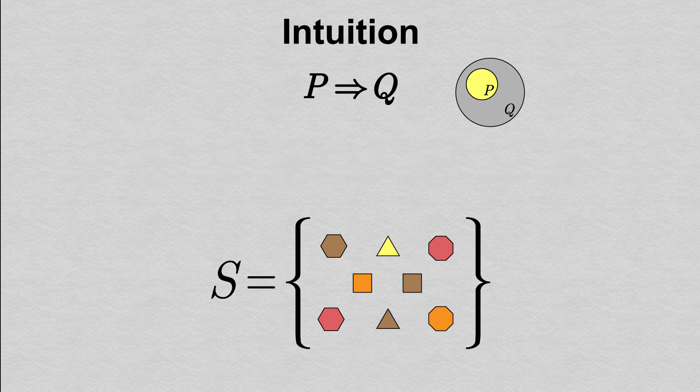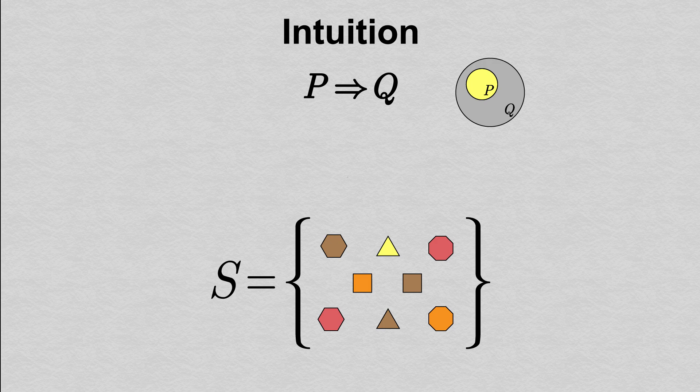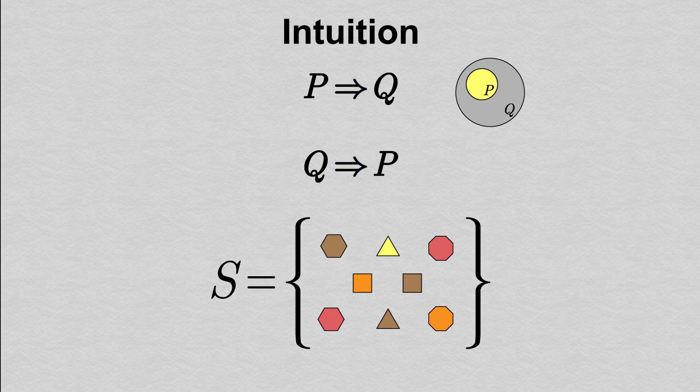Two quick notes about implications are in order. First of all, order is crucial to the meaning of an implication. P implies Q, and Q implies P mean quite different things. The direction of the arrow should help to remind us of this. We can observe this in the two examples we just saw. X being yellow implies that X is a triangle, but not vice versa.